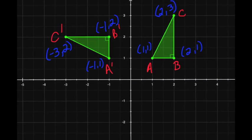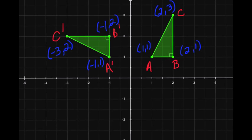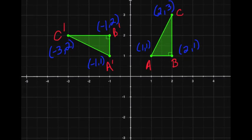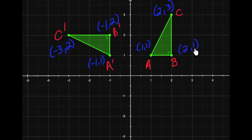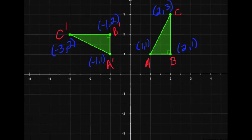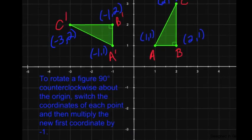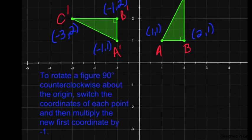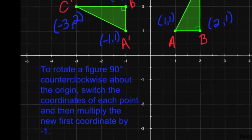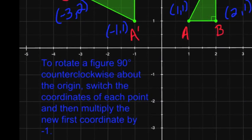What you should notice — maybe not necessarily with A and A prime, but with B and B prime and C and C prime — is that they're essentially the same numbers. The only difference is the x and y coordinates have been switched, and the first number is now negative. This follows our rule for rotating a figure 90 degrees counterclockwise around the origin: switch the x and y coordinates, then multiply the new x coordinate by negative 1.